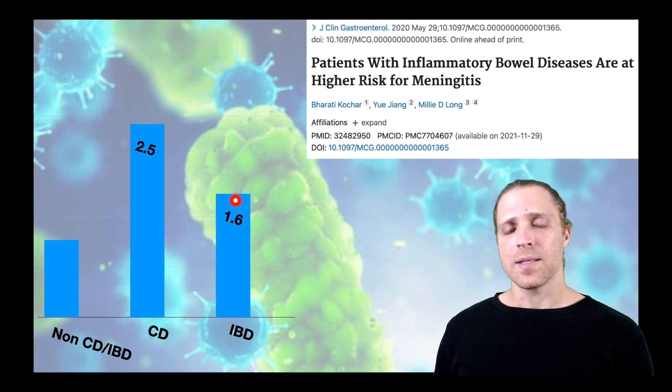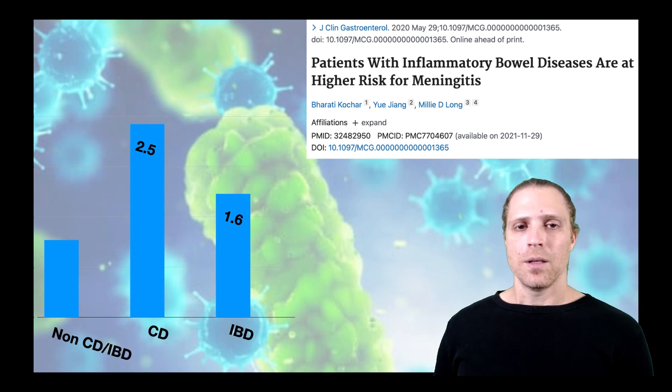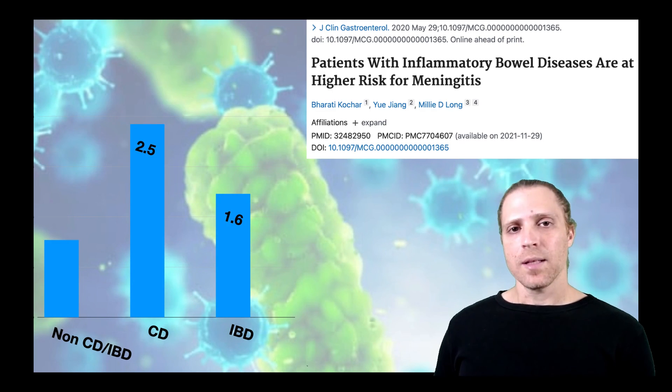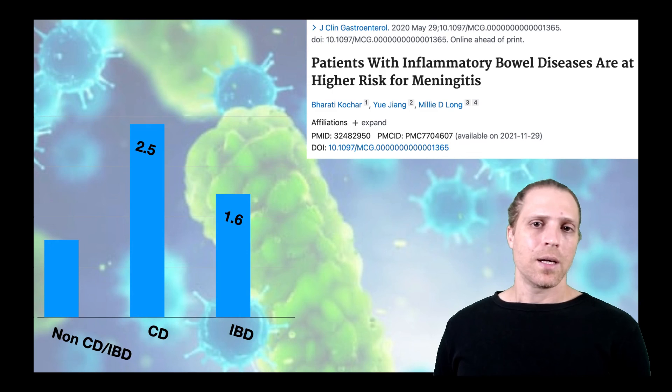This suggests that there is a great leakage of bacteria through the blood-intestinal barrier. These bacteria flow through the circulation to the meninges and cause a higher rate of meningitis. So with that, I would like to conclude this video, and I hope you enjoyed it. Until the next video, stay safe.